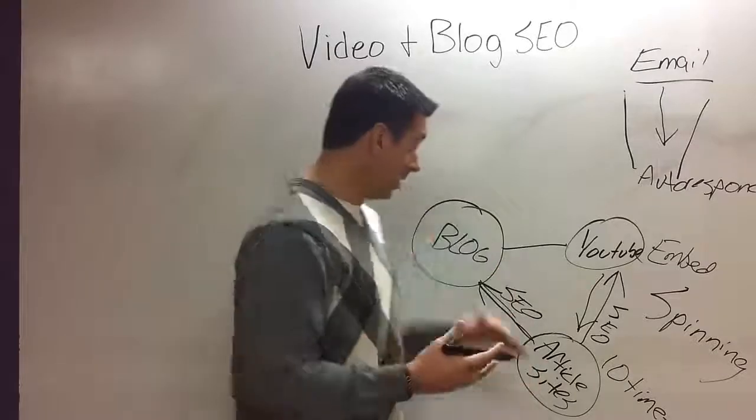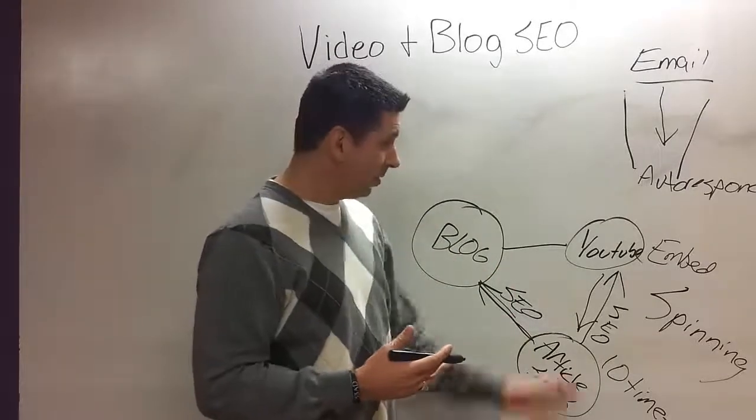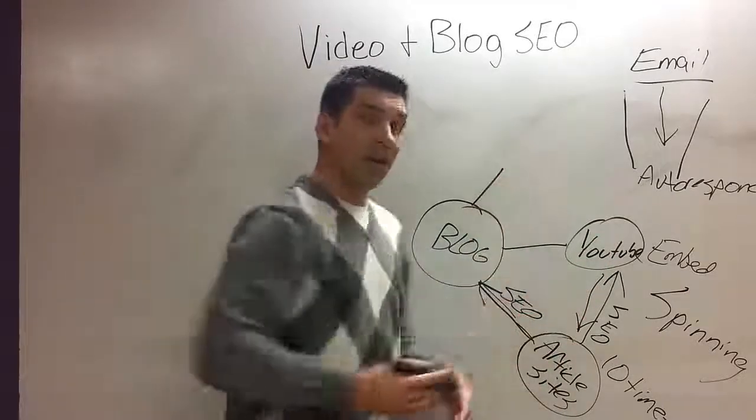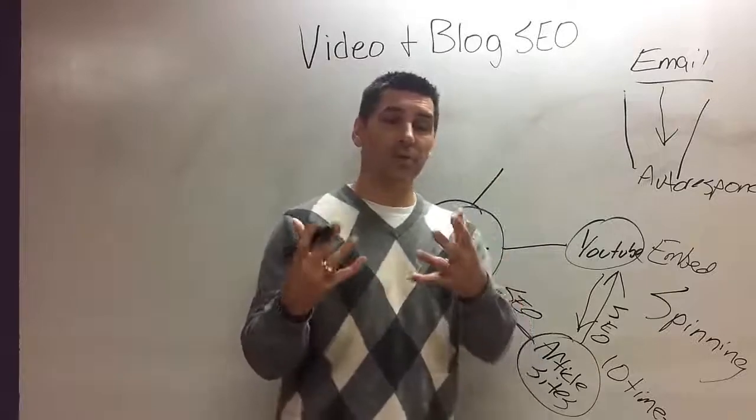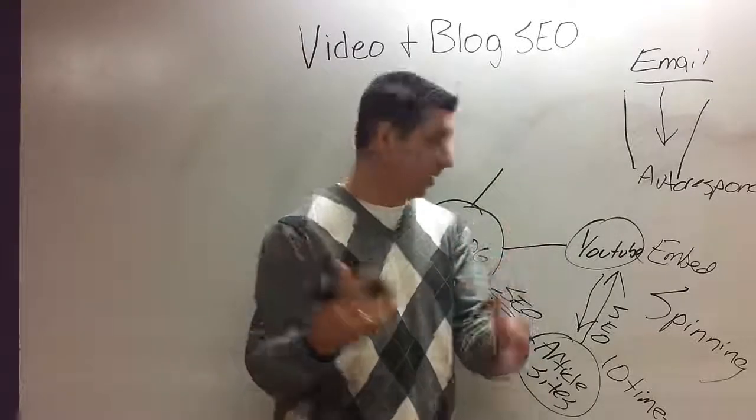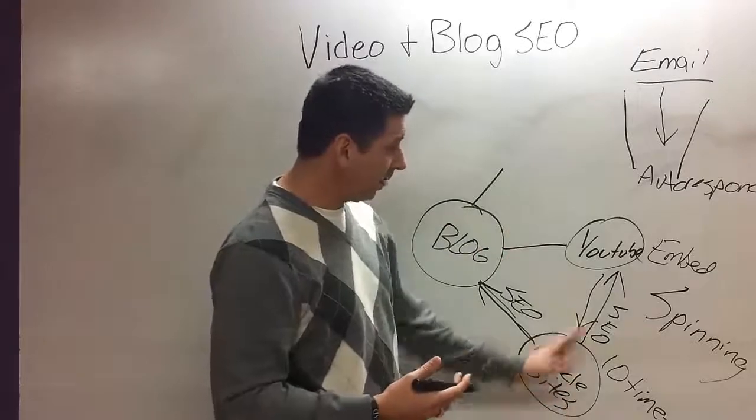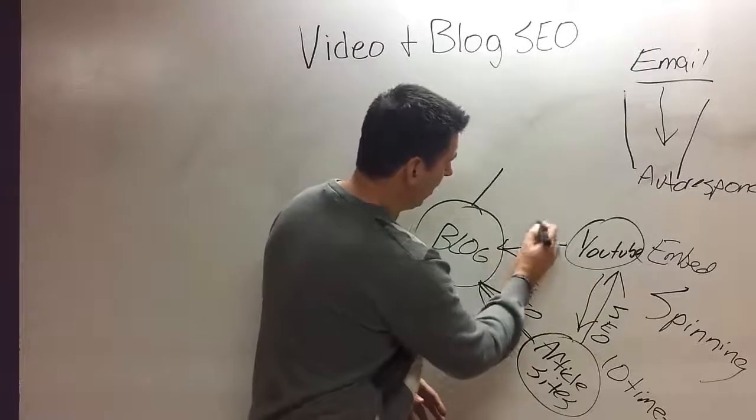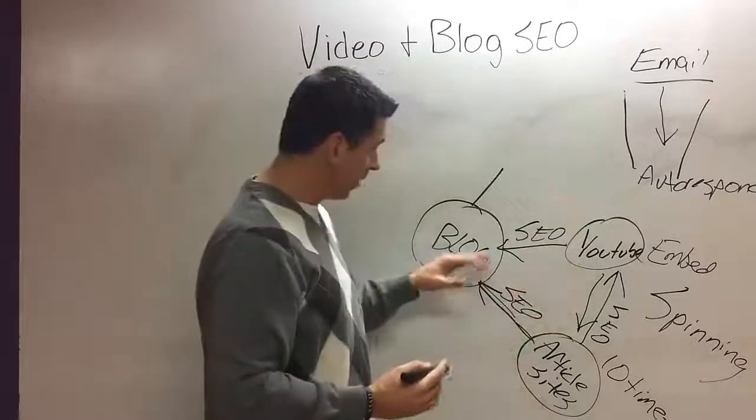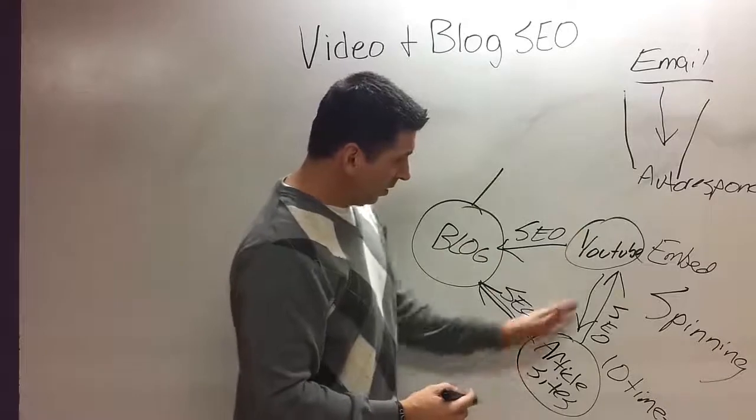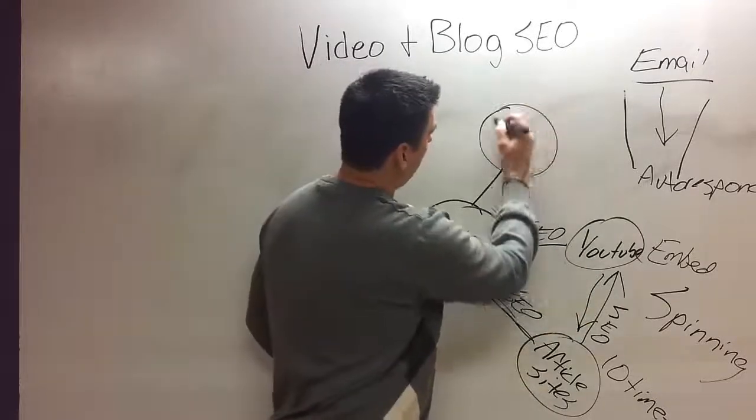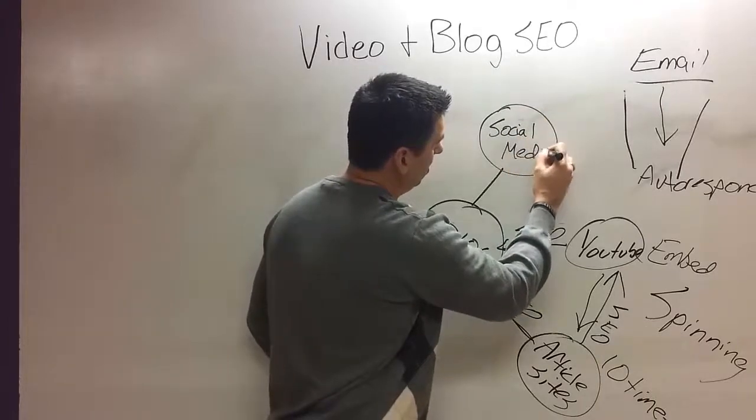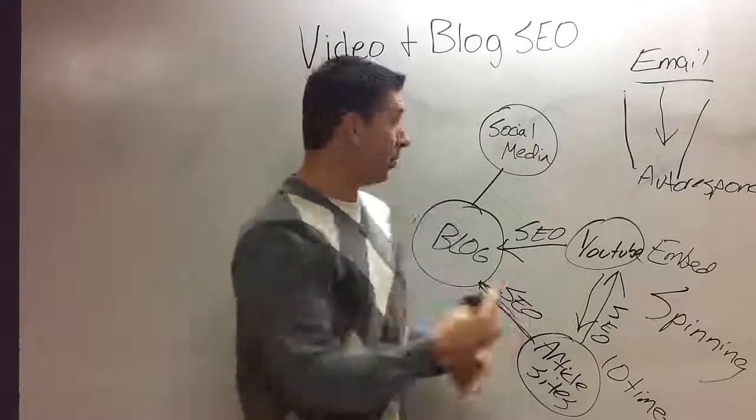So let's compare that to the person that just has one blog, no article sites, no other embed codes for the video. Who's going to rank more? I mean, to the search engines, it looks like there's a lot of relevant content out here, a lot of people like this YouTube video, so I'm going to rank that YouTube video well. But that also brings SEO back to here, to my main blog. So we're using these, and the big one here, social media is where the rubber meets the road.